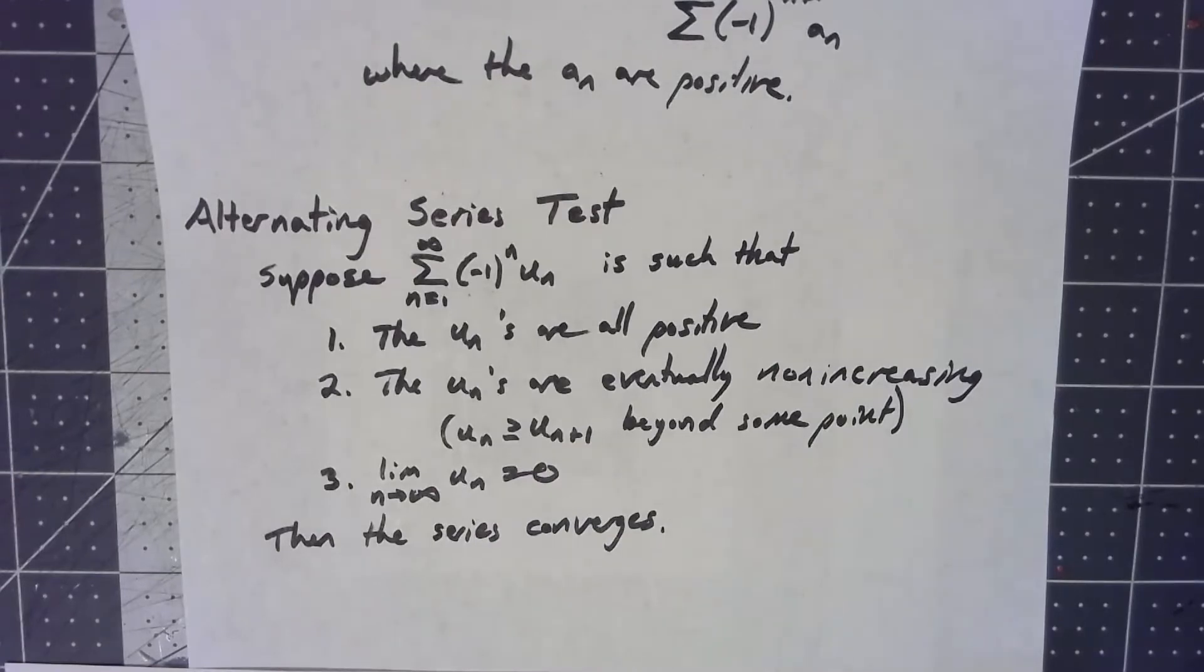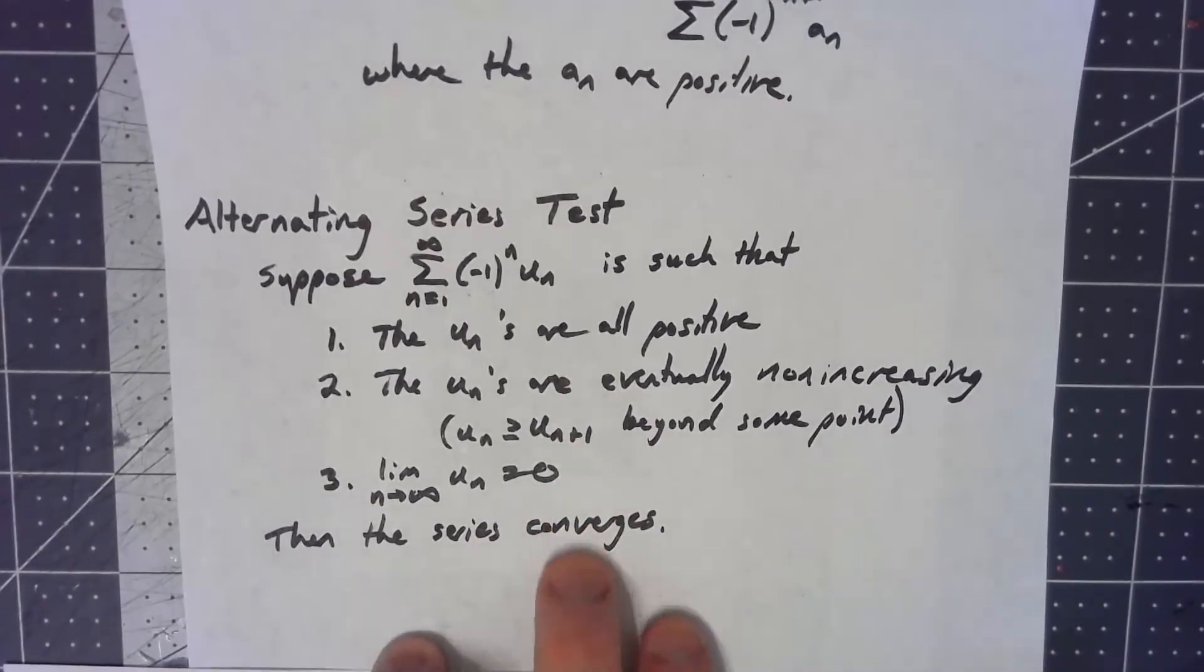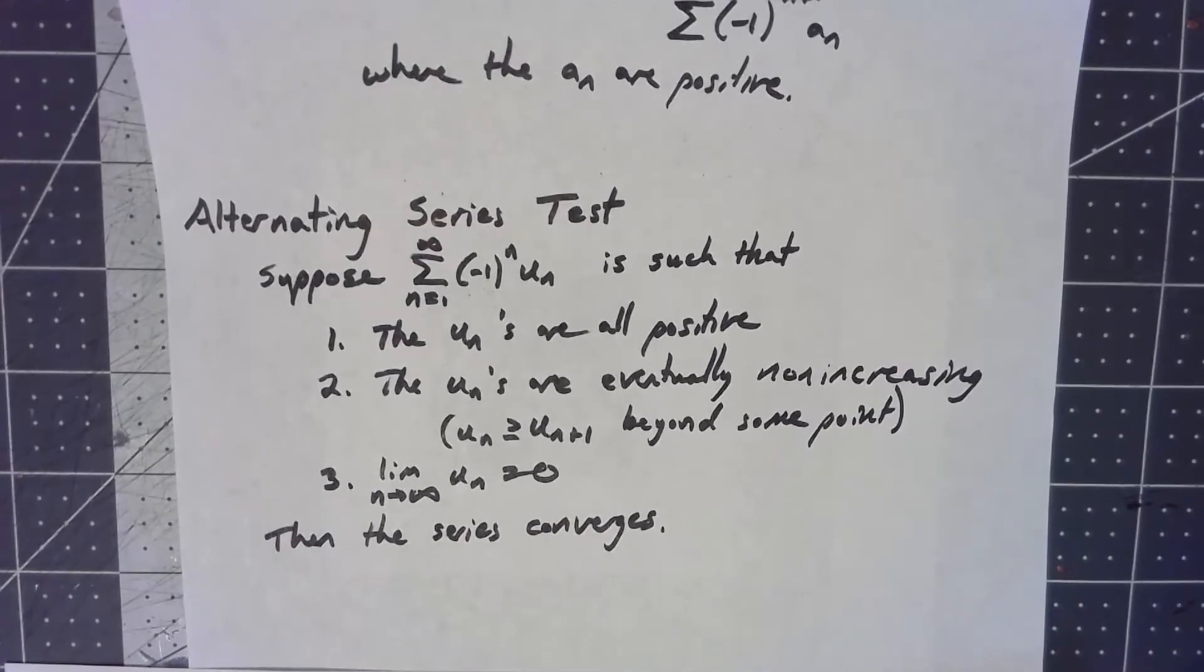There's some weird things where it can't, but most things that we're talking about, if the individual terms go to zero, that means they're not increasing. So if that's true, basically, that series automatically converges.